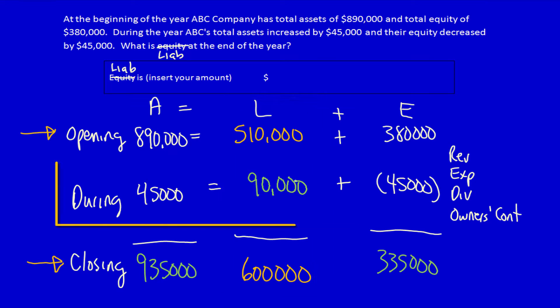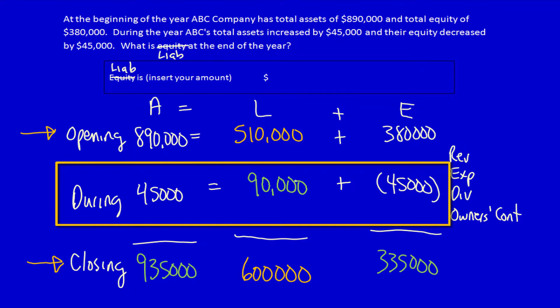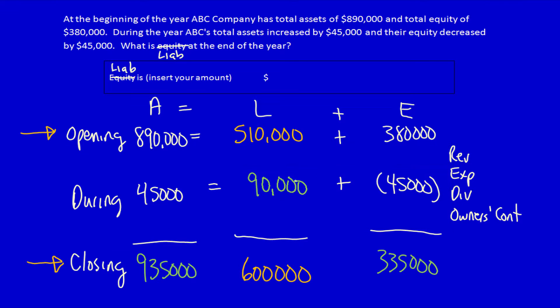Which makes sense because 45,000 is equal to 90,000 plus negative 45,000. Liabilities is equal to 600,000. In our next video we're going to do one more, more complicated solve for unknown numbers.